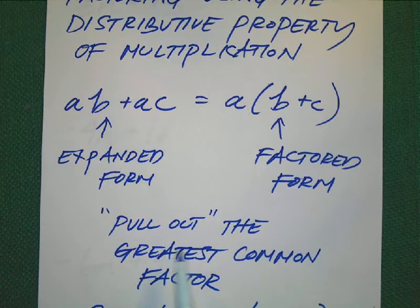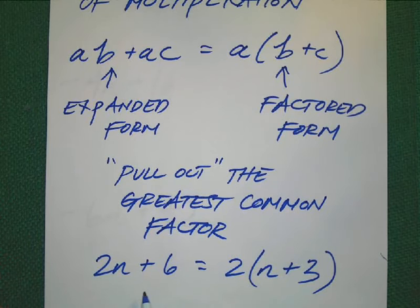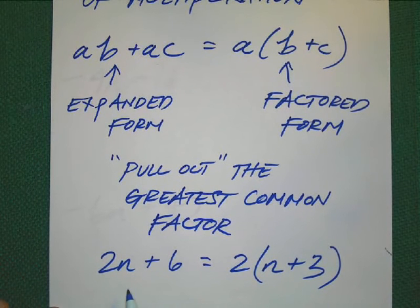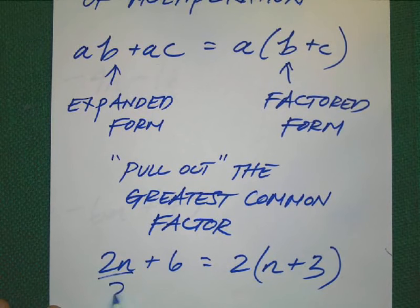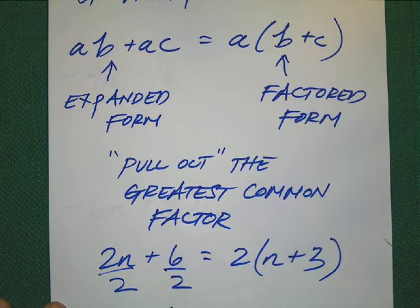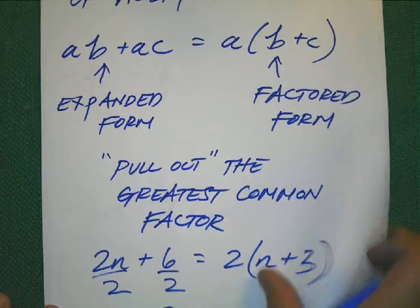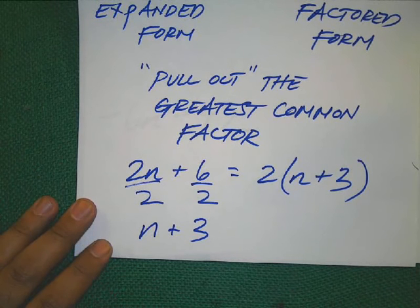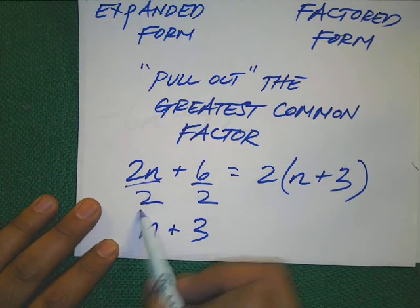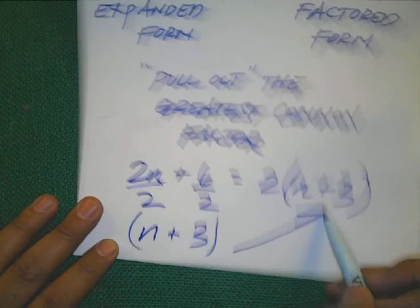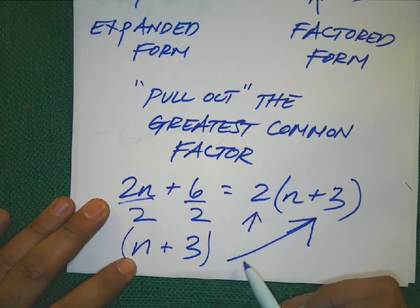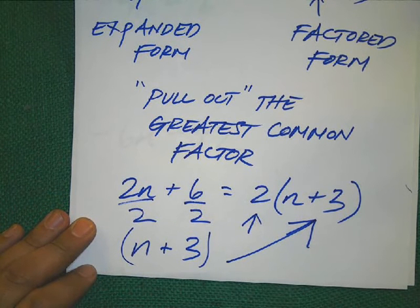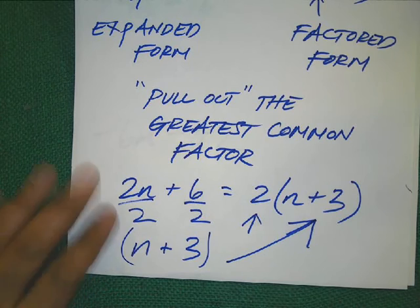The key concept behind factoring is to pull out the greatest common factor between the two terms. For example, the greatest common factor of 2n and positive 6 is 2. So 2n divided by 2 is n. Positive 6 divided by 2 is 3. Remember to honor the operator when you use the distributive property. So you are then going to write it up here. Here is one factor, n plus 3. And the other factor is the factor that you pulled out, which is 2.